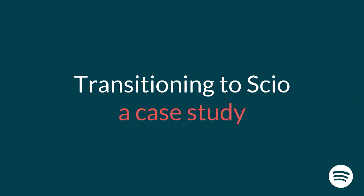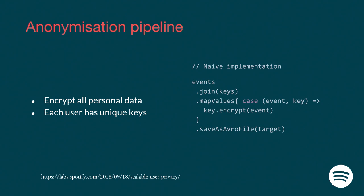We're now going to talk about an example of a pipeline job written a few months ago at Spotify, as an example of how we use Scio and the benefits we get from it. About a year ago, we started heavily deprecating our Hadoop cluster. Before that, the majority of our jobs were written in Crunch, a Java framework, with also a little bit of Scalding for the functional programming enthusiasts. That was predominantly the framework used, including for the anonymization pipelines of our event delivery.